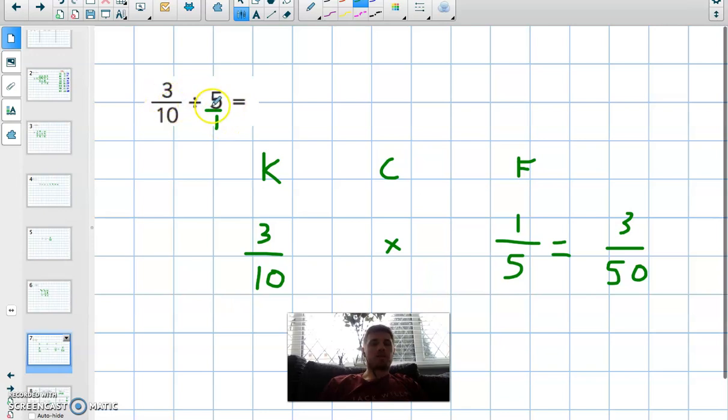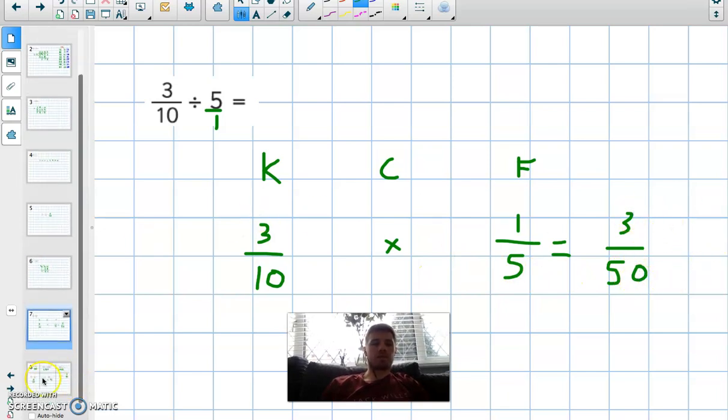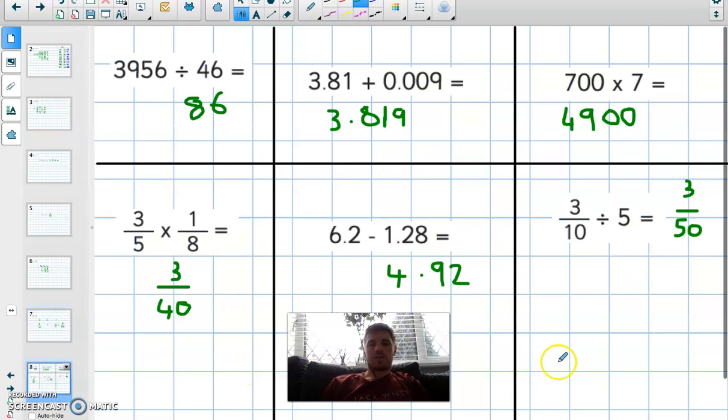And finally we are dividing a fraction by a whole amount. So 3 over 10 divide by 5. The method we use is keep, change, flip. So we keep the three-tenths, we change the division sign to a multiplication sign, and then we flip 5 over 1 into 1 over 5. When we multiply fractions, as I've just said before, we multiply the numerator. So 3 multiplied by 1 is 3, and then 10 multiplied by 5 is 50. So 3 over 50 would be the answer for that particular question.